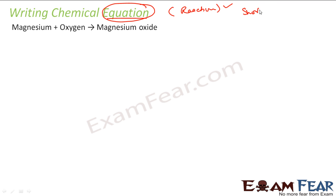Also, we can use short form, and also we can balance the equation. Why? Because the law of conservation of mass says that you cannot create or destroy mass. So if you have one magnesium atom on one side, it has to be one magnesium atom on the other side. If you have two oxygen atoms, you should have two oxygen atoms on the product side as well.